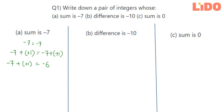Because I want the answer to be minus 7, I am going to retain minus 7 on the LHS and send the other term to the other side.